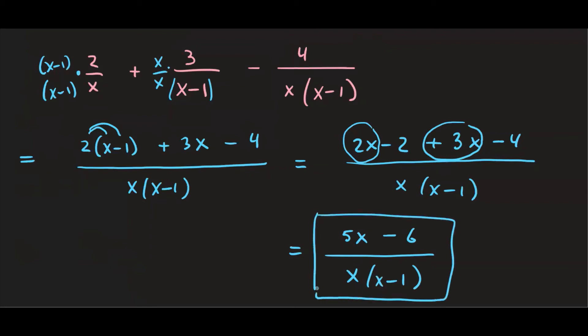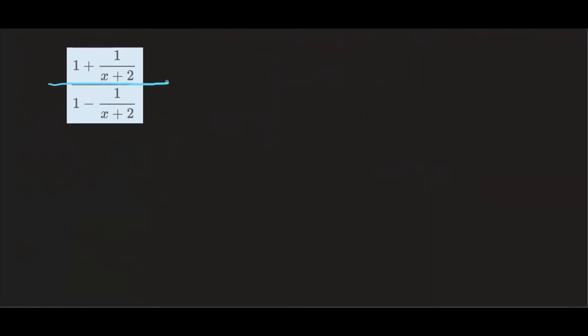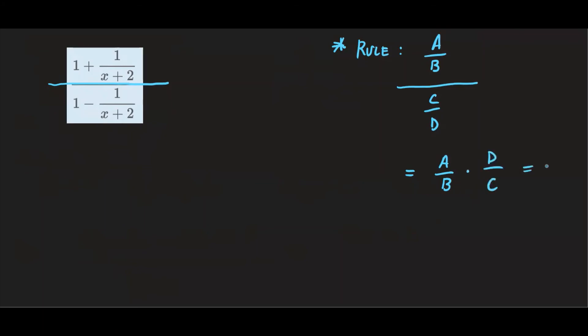Let's do one last example. Here I have a fraction within a fraction — a complex fraction with a big fraction line and little fractions inside. To handle this, recall the rule: if you have a fraction a over b divided by c over d, you keep the first fraction a over b, change the division to multiplication, and reciprocate the bottom fraction to get d over c, giving you ad over bc. That's the rule to follow when working with division like this.